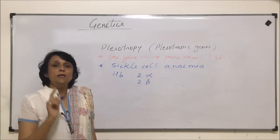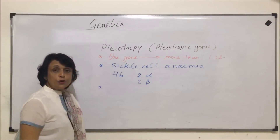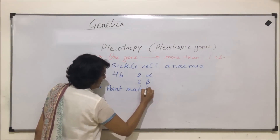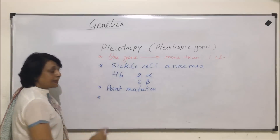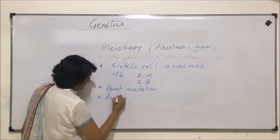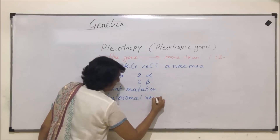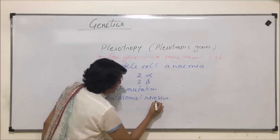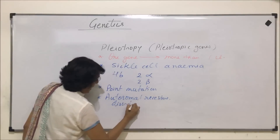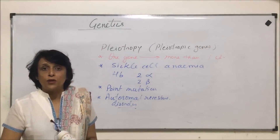In sickle cell anemia, in one of the beta chains, there is a point mutation. So, this is caused due to a point mutation. Sickle cell anemia is an autosomal recessive disorder, and it is caused due to point mutation.